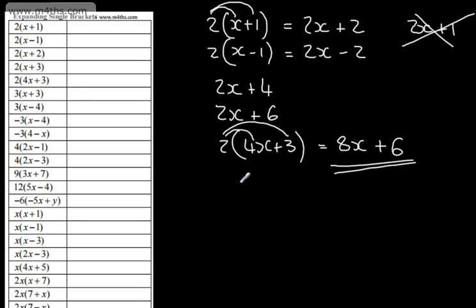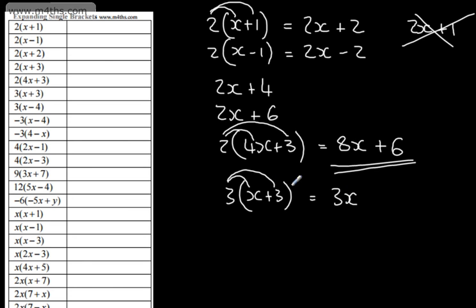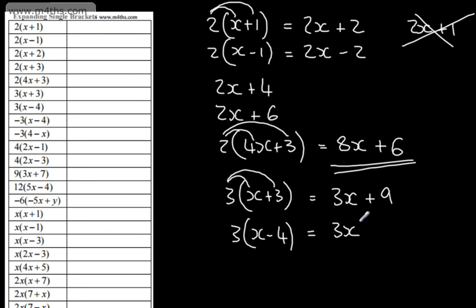Let's look at the next one. We've got 3 brackets x plus 3. We're multiplying everything on the outside by the inside. So that is going to give me 3 times by x, which is 3x. 3 times by 3 is 9, and I simply need to add that on. If we look at the next one, we're going to have 3, and then we have x minus 4. Well, that's going to give me 3x. 3 times by 4 is 12. We need to subtract it, so that will be minus 12. And that is an expanded expression — an expression is just a collection of terms.